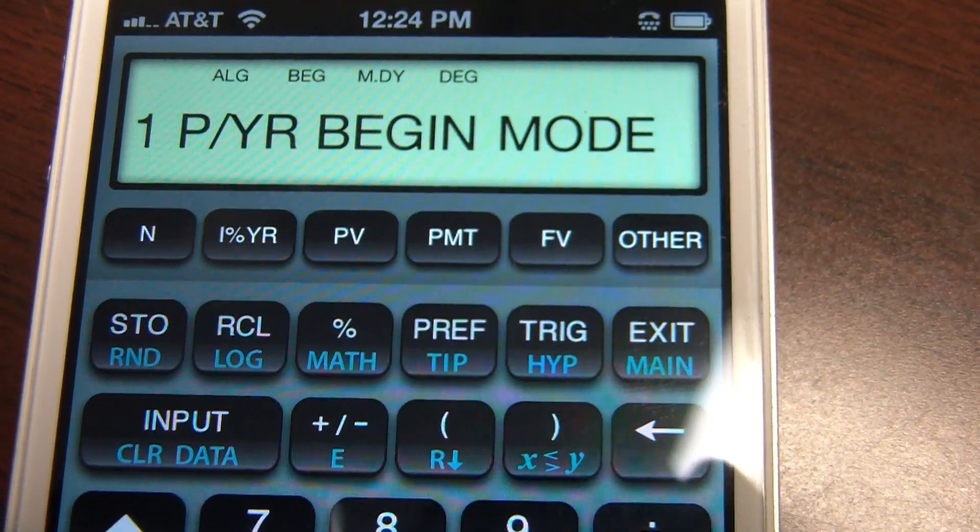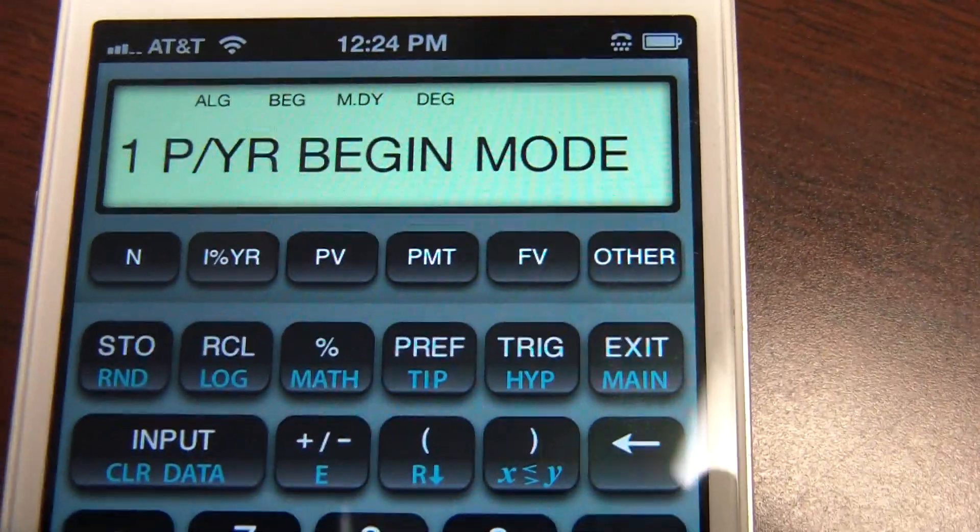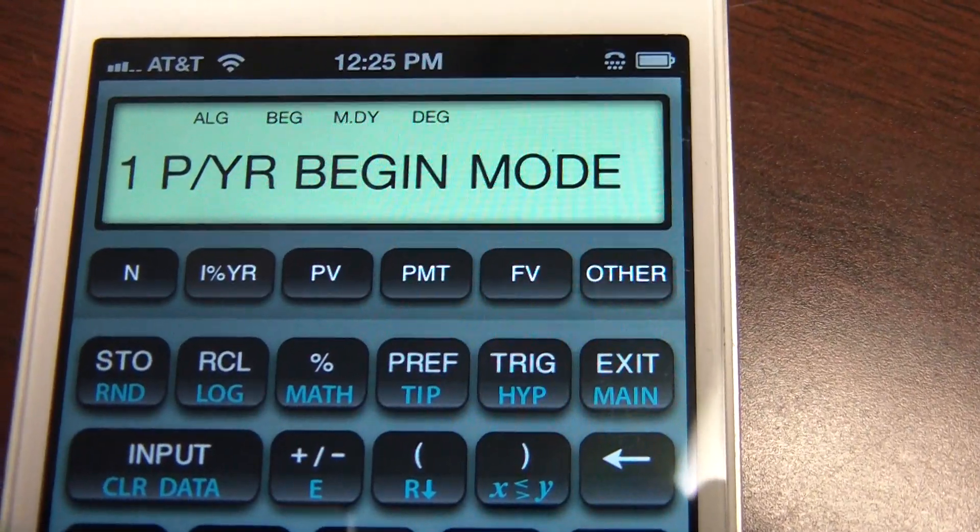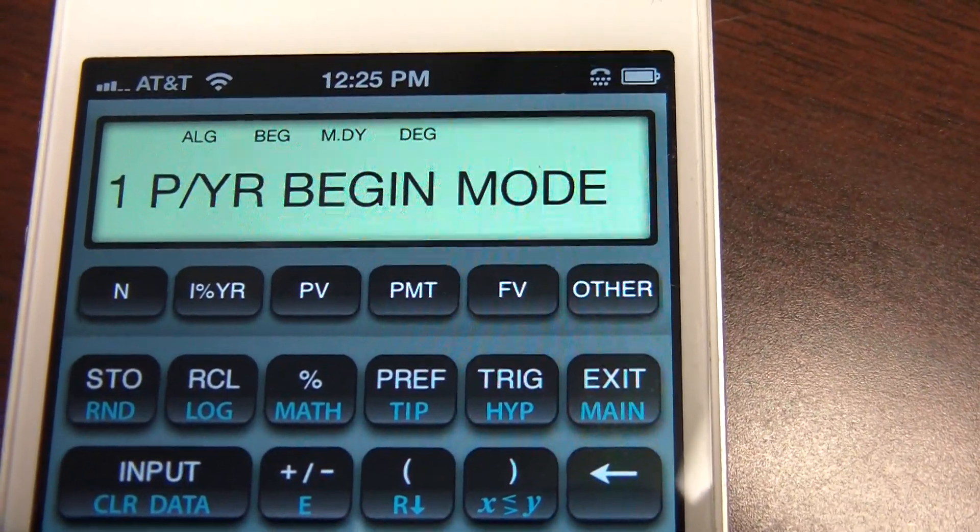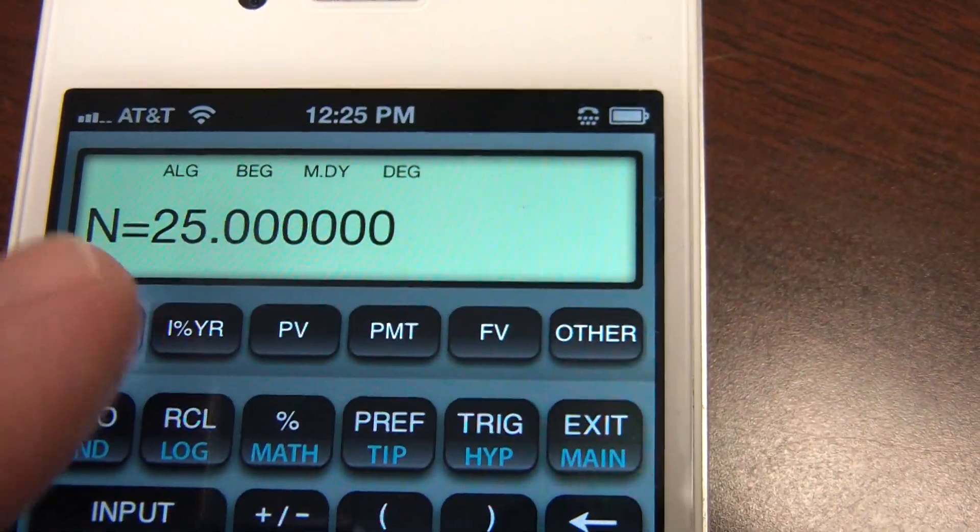We're at the main menu. Suppose I want to find out what the future value is of a $5,000 one-time payment into an IRA in 25 years. 25 is my number of time periods in.